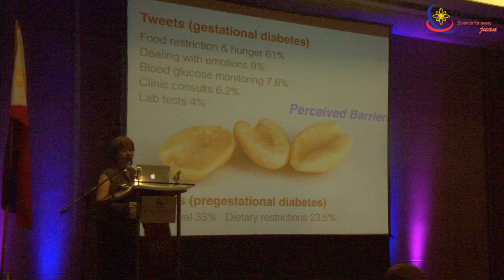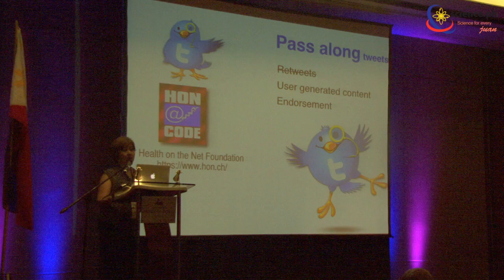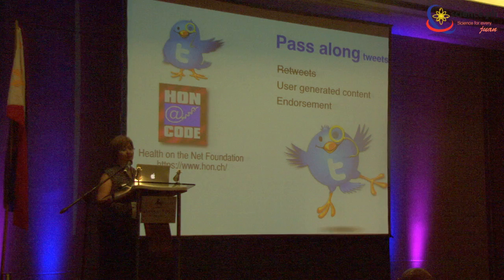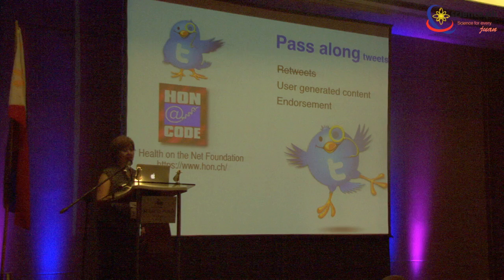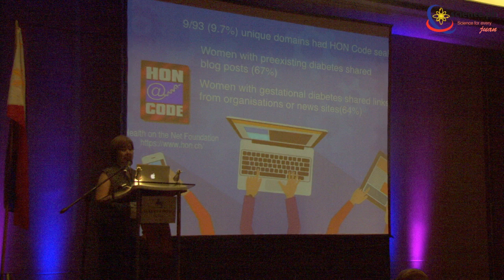We also looked at whether the tweets linked to user-generated content — their own blogs — or endorsed content from known agencies like the American Diabetes Association. We checked whether the linked blogs or sites had the HONcode seal. The HONcode, from the Health on the Net Foundation, ensures quality, objectivity, and transparency of medical information online. Out of the 93 unique domains, only a few had the HONcode seal — something we are concerned about.